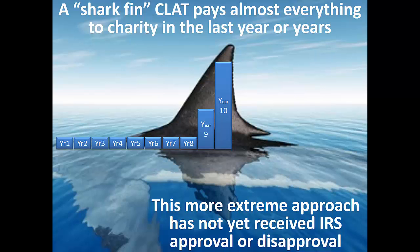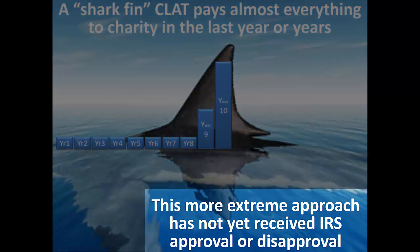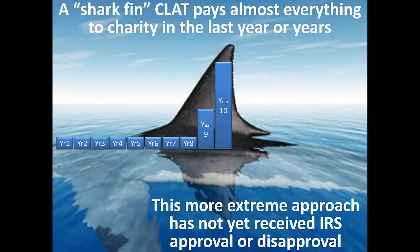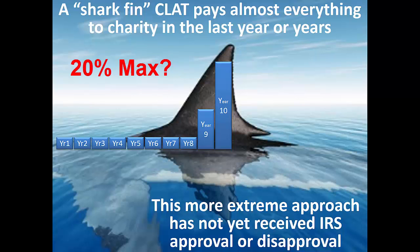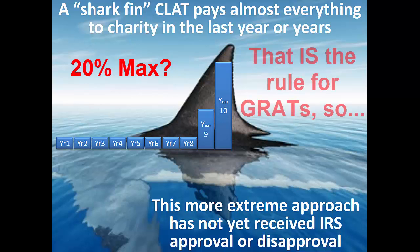Using these more extreme payouts is a more aggressive approach because it has not been approved or disapproved by the IRS, although Revenue Procedure 2007-45 seems to allow any payments. Some argue that the 20% annual increases, which have been specifically allowed in PLR 2012-16045, should be treated as a maximum. The argument is that a 20% increase in annuities is the maximum allowed for grantor retained annuity trusts, and so perhaps the IRS will dispute charitable lead annuity trusts that exceed this level.